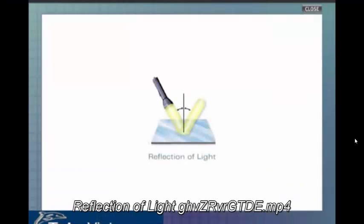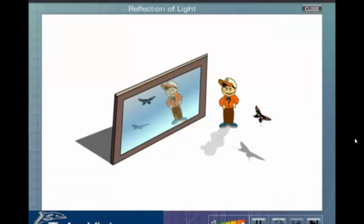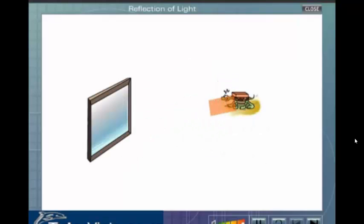Reflection of Light. Have you ever wondered why images are formed in a mirror? This is due to the bouncing back of the part of the light incident on the mirror. This bouncing of light from a smooth surface is called reflection.